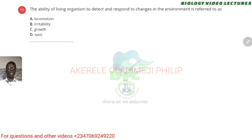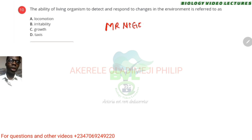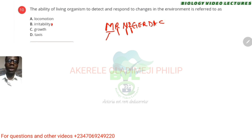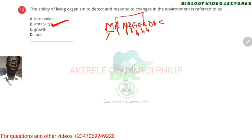The ability of a living organism to detect and respond to changes in the environment — if you can remember the characteristics of living things summarized as MRNIGERDAC: M means movement, R means respiration, N means nutrition, I means irritability — the ability of a living thing to respond to stimuli — so the answer to this is B. G means growth, E means excretion, R means reproduction, D means death, A means adaptation, C means competition.